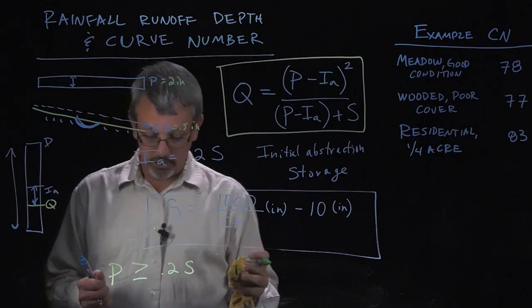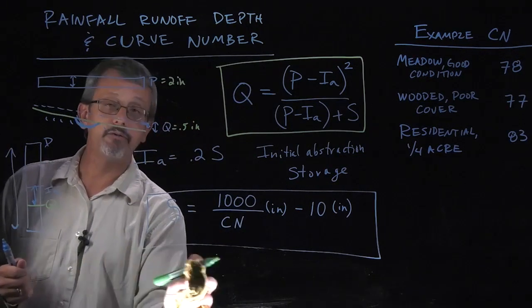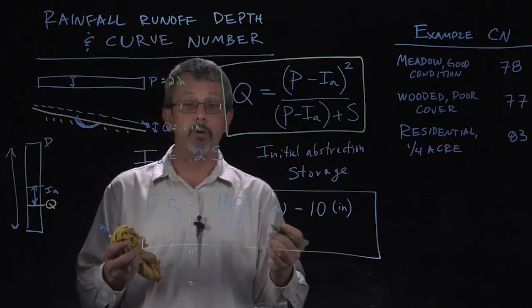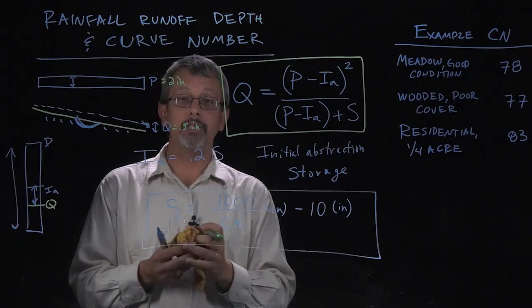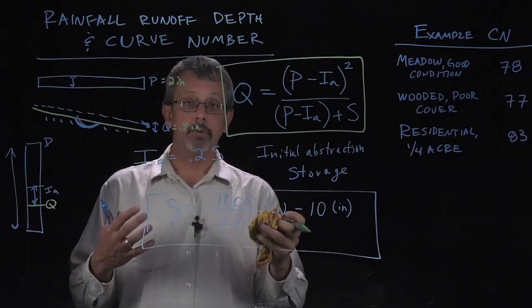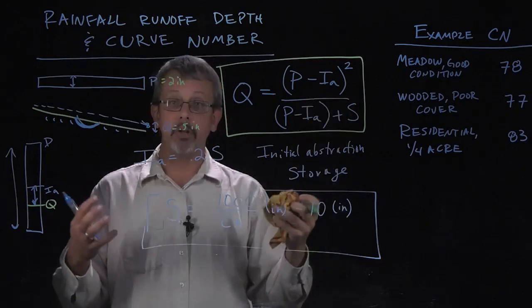This curve number CN is very similar to things like a runoff coefficient C, which we might have seen earlier. It's something that's measured or approximated from conditions that are on the field.